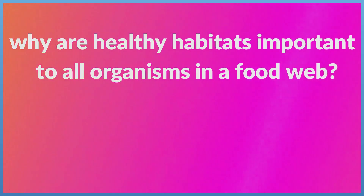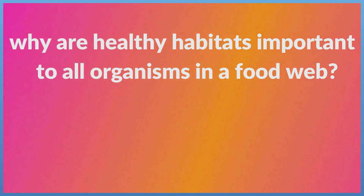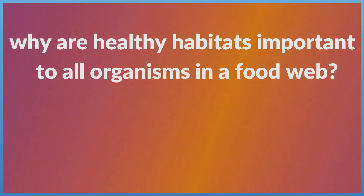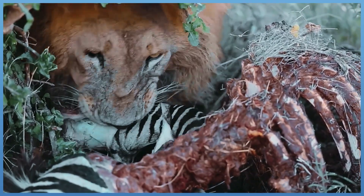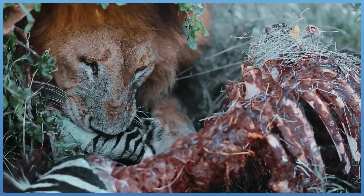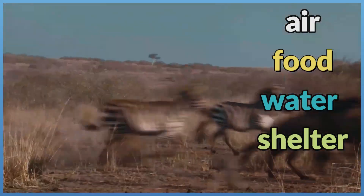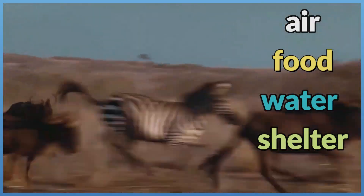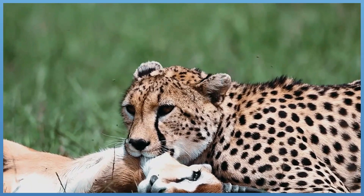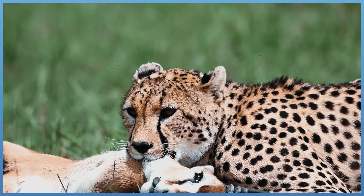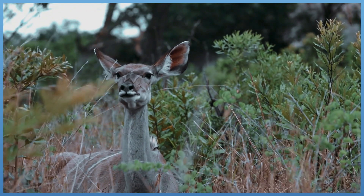Why are healthy habitats important to all organisms in a food web? Because they provide organisms with resources that they need to survive, such as air, food, water, and shelter. So if each species gets its needs to survive, there will always be enough food for each organism in the food web.